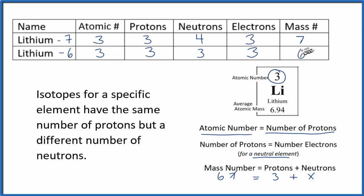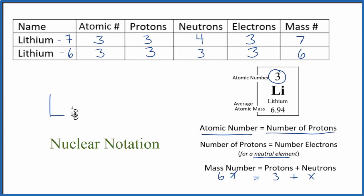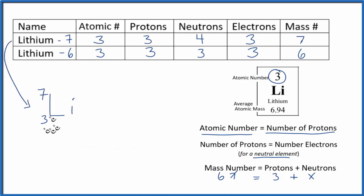That's how we figure out the number of protons, neutrons, electrons, and the mass number for lithium. Lithium has these two isotopes, and the only difference is the number of neutrons and therefore the mass numbers. Sometimes you'll see it written with Li, the atomic number below, and the mass number above — so lithium-7 is written with a 3 below and a 7 above. Lithium-6 would be Li with the same atomic number of 3 and a 6 above.